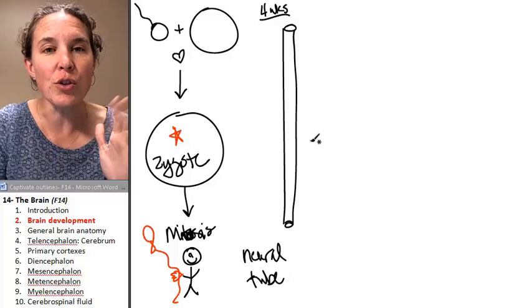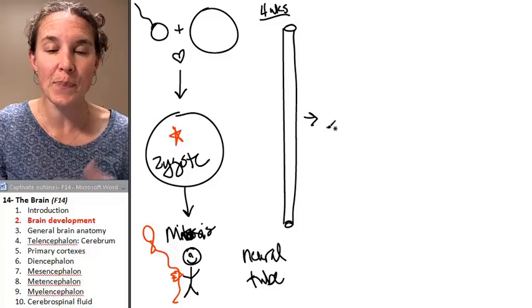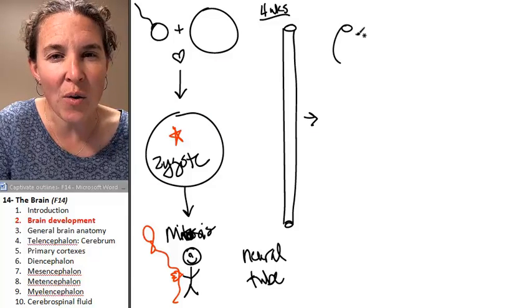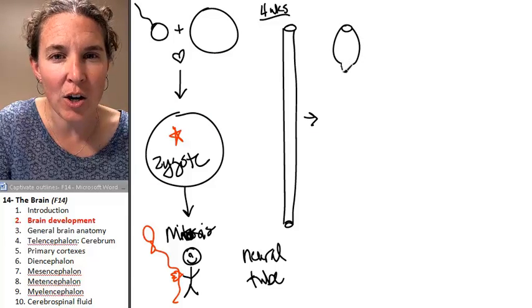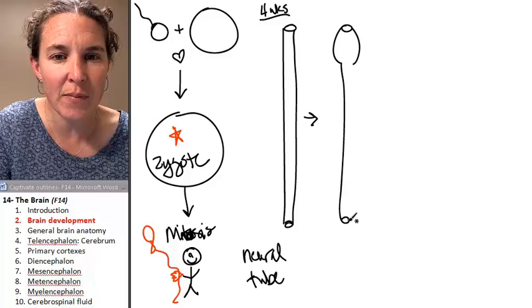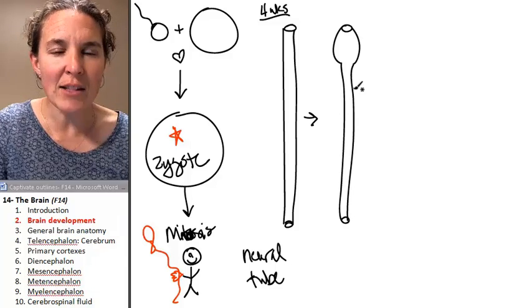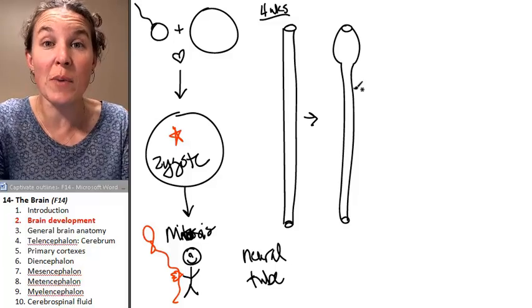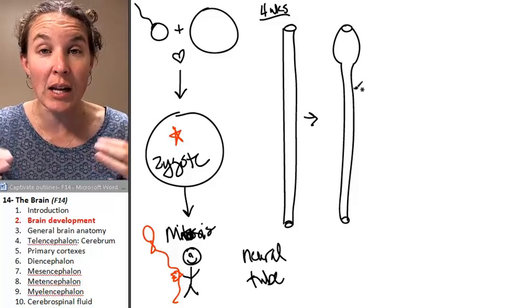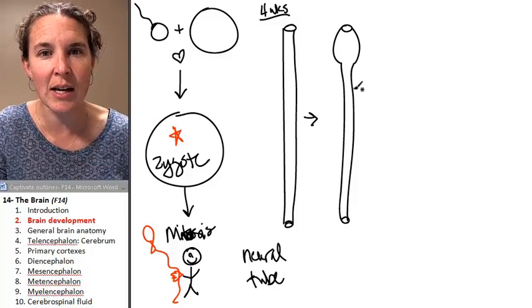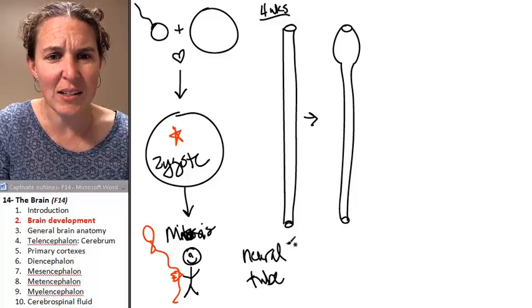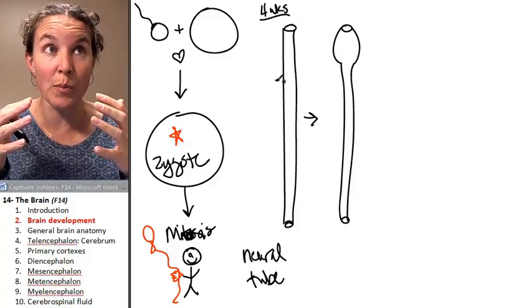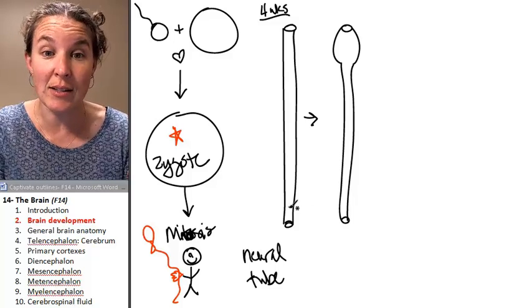Those cells that are going to become your nervous system first form a neural tube. The neural tube slowly, I mean that actually happens pretty quick, changes how they are going through mitosis. So that one end of this neural tube starts going through mitosis faster than the rest of it and it starts to kind of swell.